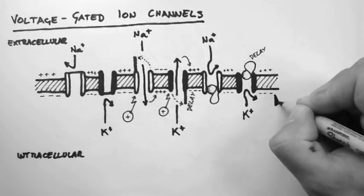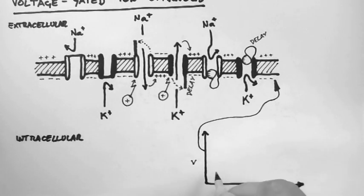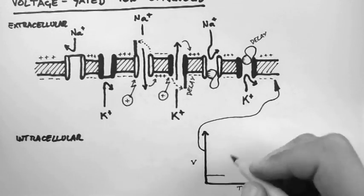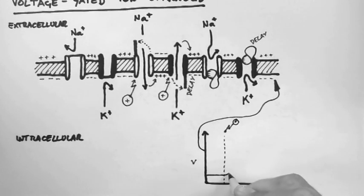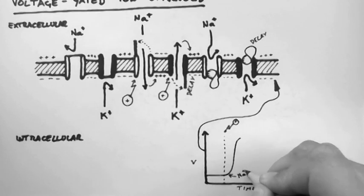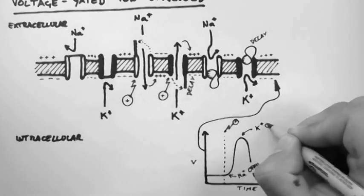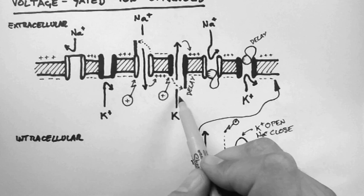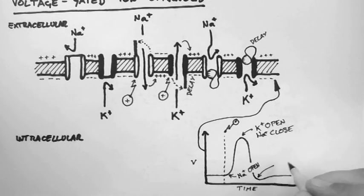So if we look at a voltage recording taken inside the cell, and we look at voltage versus time, then we start with our resting membrane potential. Then we applied our stimulus, and this opened the voltage-gated sodium channels. The cells become more positive, and we can see that on this graph. Now here the potassium channels open and the sodium channels close. The positively charged potassium rushes out of the cell and the cell becomes more negatively charged, and we can see that drop on this graph also. Then the potassium channels close and the resting membrane potential returns.